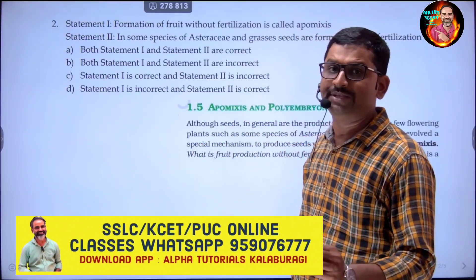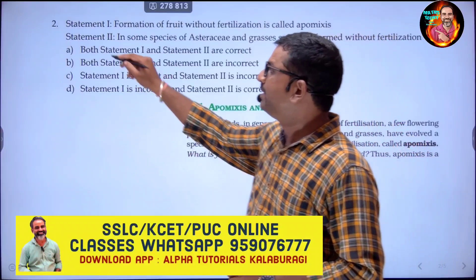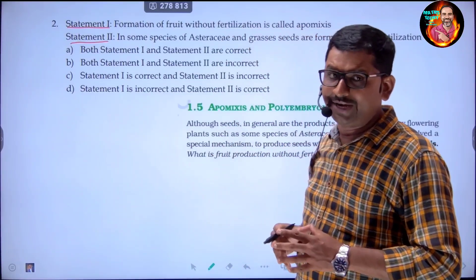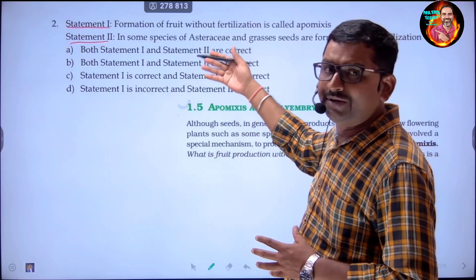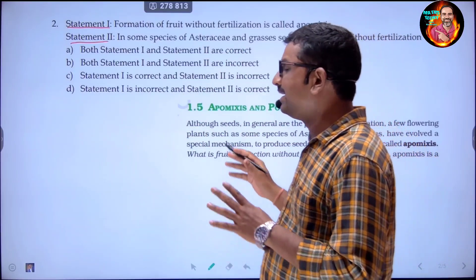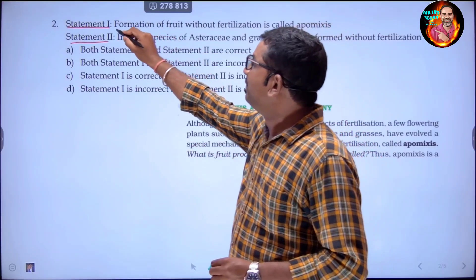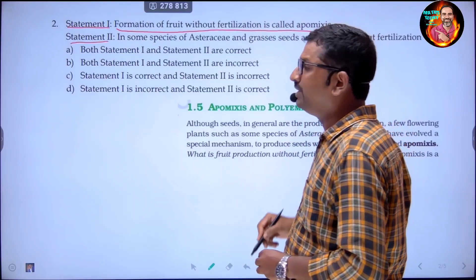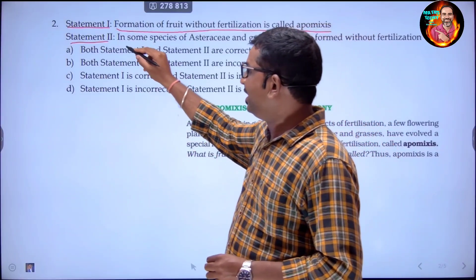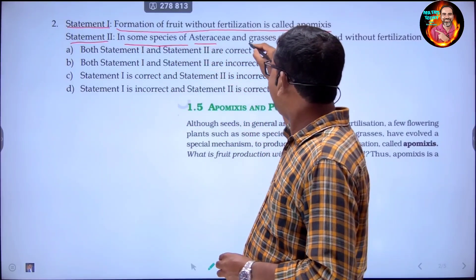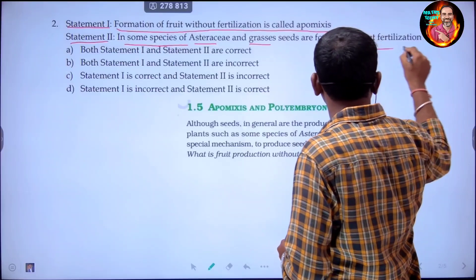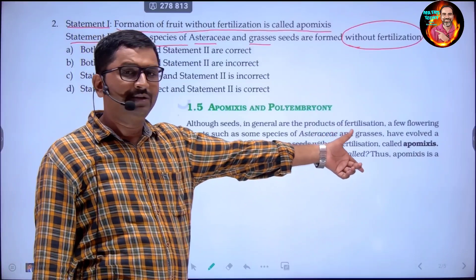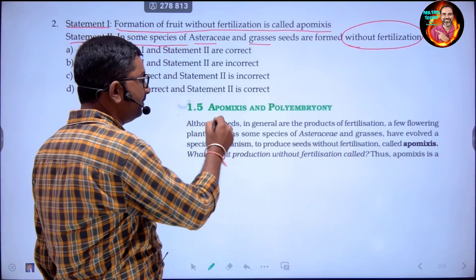One more question — a statement-based question from the model question paper. There are two statements given and four options. You have to read the statements and find the correct answer. Statement one: 'Formation of fruit without fertilization is called apomixis.' Statement two: 'In some species of Asteraceae and grasses, seeds are formed without fertilization.'